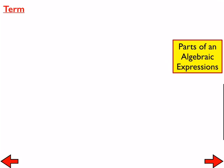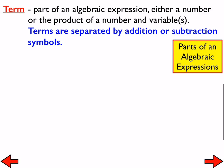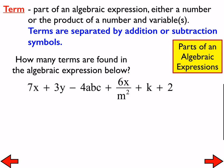Parts of algebraic expressions — since that's our focus today. A term is part of an algebraic expression that is either a number or the product of a number and variables. The key component is that terms are separated by addition or subtraction symbols. Here's a problem: how many terms are found in the algebraic expression below? Quickly turn to your shoulder partner. How many terms are in that algebraic expression? I heard 6 and I heard 5 — which one is it?